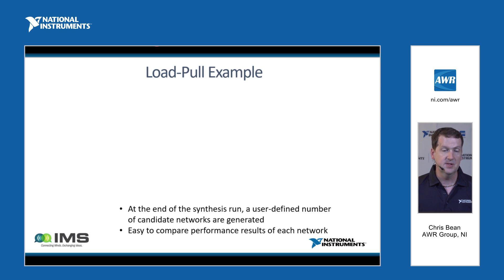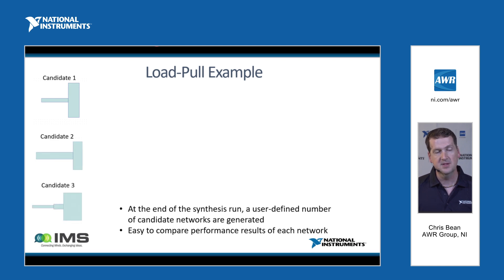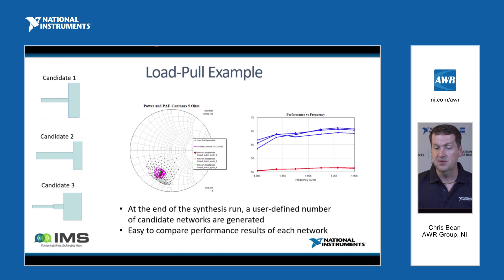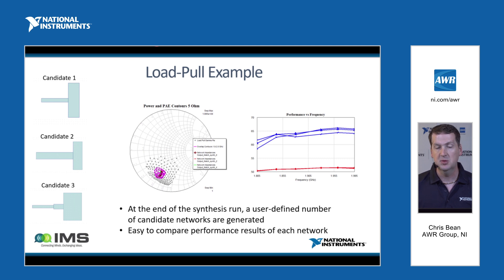Regarding post-synthesis processing: the architecture we've put into the software makes it easier for the user to compare all the results that have just been synthesized. For instance, we've got three candidate networks represented by pictograms on the left. We've taken great care to make it easy to compare the results of each matching network post-synthesis. The rectangular graph shows performance versus frequency over the original 1.8 to 2 GHz fundamental frequency range, comparing efficiency and output power capability for each network with the device. You can easily compare all networks at once, select one, move to the next, or select any subset of the synthesized networks.